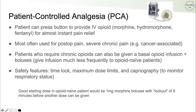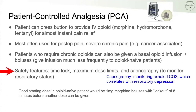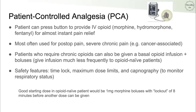Patient-controlled analgesia is a great inpatient method that gives patients more control over their pain. Patients get a button to press to deliver IV opioids, providing almost instantaneous relief. This is most often used for post-operative pain and cancer-associated pain. PCA pumps have safety features including a time lockout between doses, maximum dose limits, and capnography to monitor respiratory status. A good starting dose in opioid-naive patients is 1 mg of morphine in boluses with a lockout of about eight minutes.